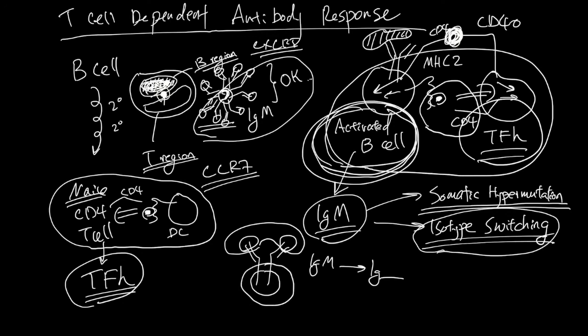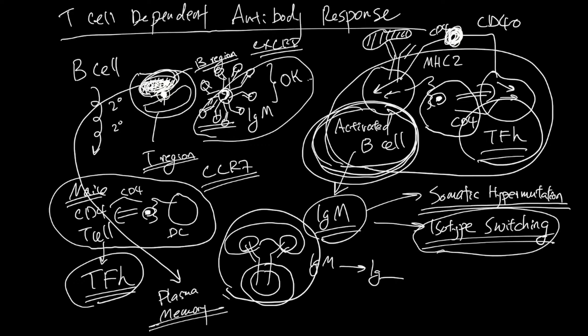Finally, these B cells now making even better antibody divide, make a population of clones and make the plasma cells and memory cells. In summary, this T cell dependent antibody response made a durable response that can continuously get better with somatic hypermutation and isotype switching.